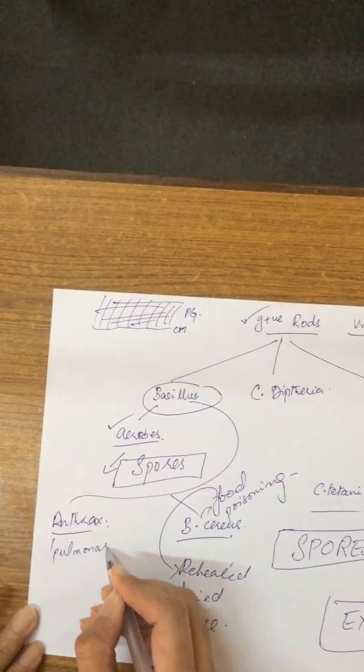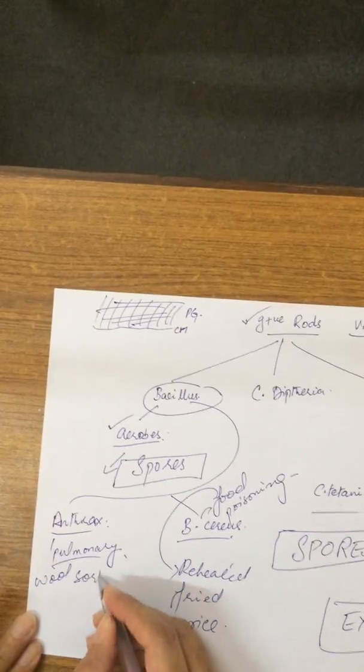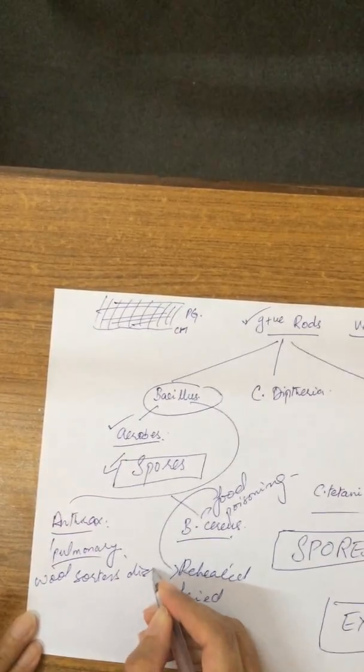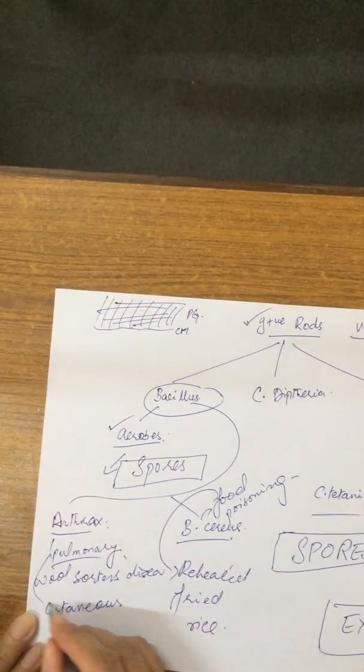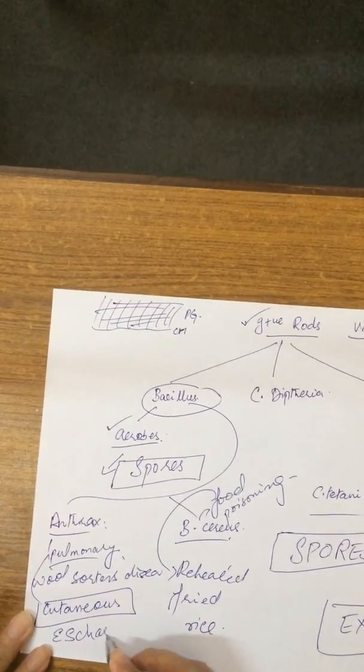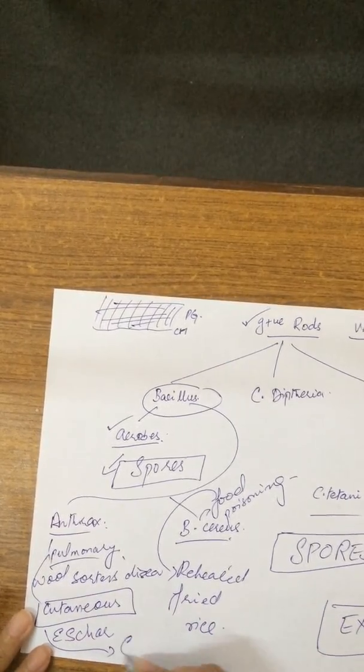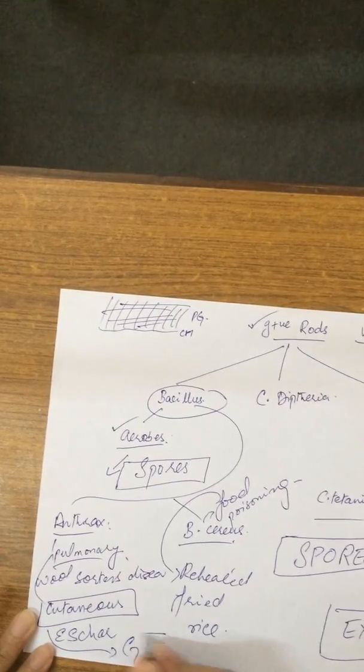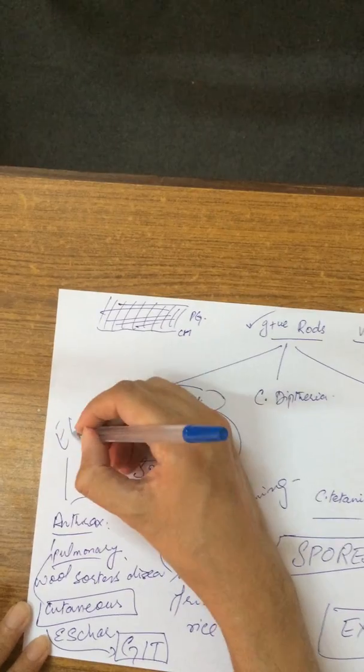We have pulmonary anthrax, also called wool sorter's disease. Then we have cutaneous anthrax where the most important character is an eschar, which is a black colored scab. And then we have anthrax of the GI tract. Anthrax also has an exotoxin.